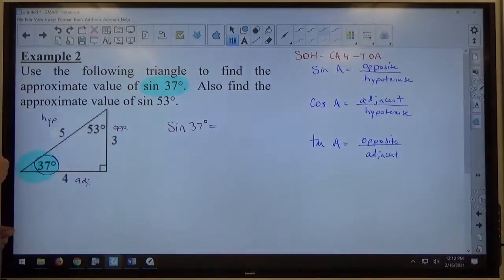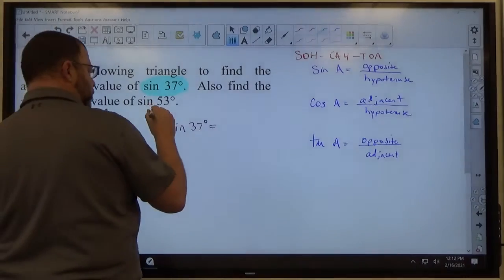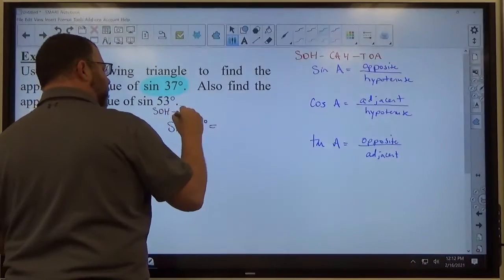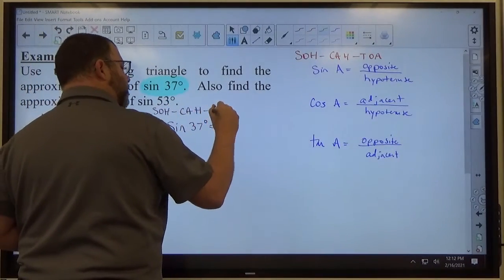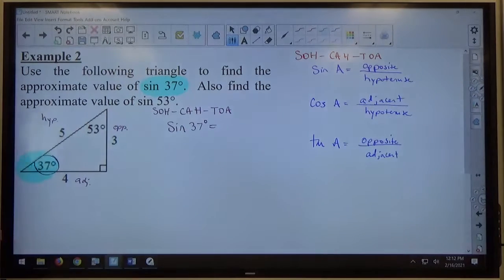And then sine of 37, maybe I also want you to have SOHCAHTOA written on your paper. The hardest part of SOHCAHTOA is knowing how to spell it. So if you just, every time you need to use it, you write it down, the spelling becomes second nature and it's not that hard to know.